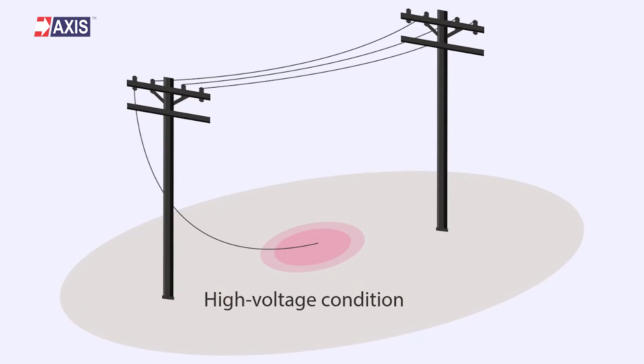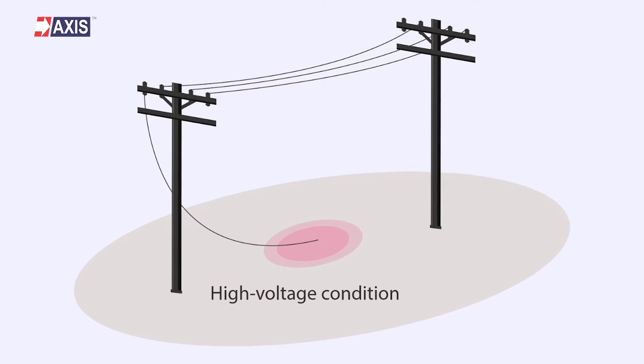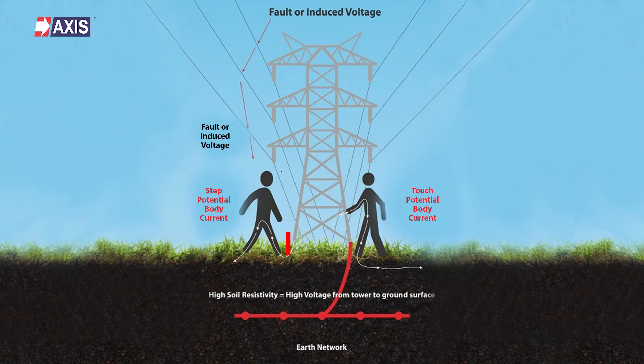Now let's understand step potential more deeply. Imagine a scenario where current flows from an overhead conductor through a chain-link fence, or when an overhead conductor touches the ground. This creates a high voltage condition. The soil's resistivity then causes a voltage gradient, leading to a voltage difference between two points at the ground. This is what we refer to as step potential. It's called step because this voltage difference can occur between your feet as you walk near the energized area, and this difference can cause electrical current to enter and surge through your body, which can be fatal or cause serious injuries.